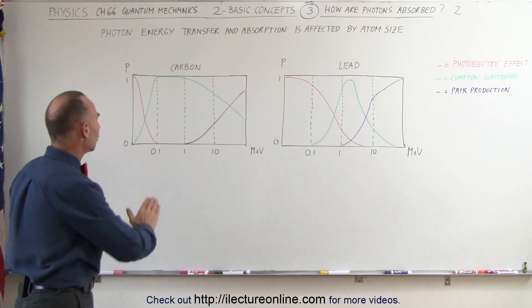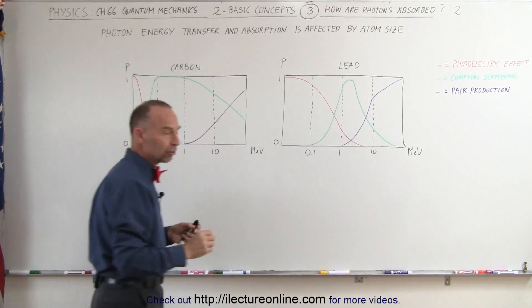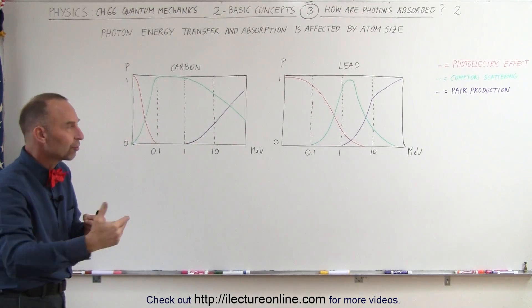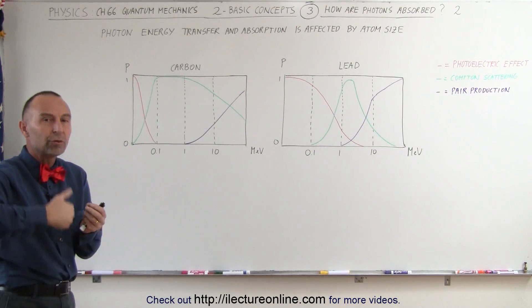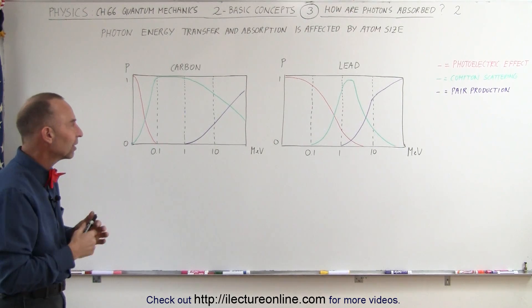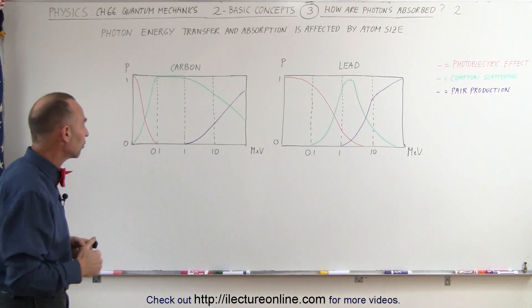Notice again the red line here represents that this is the photoelectric effect where all the energy is transferred to the electrons to move them to higher energy levels or to ionize the electrons or ionize the atoms by removing the electrons.